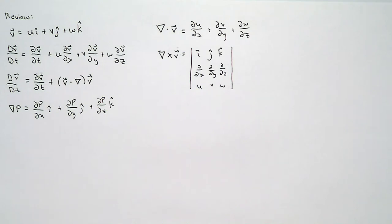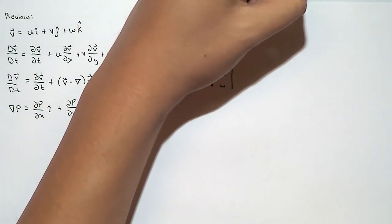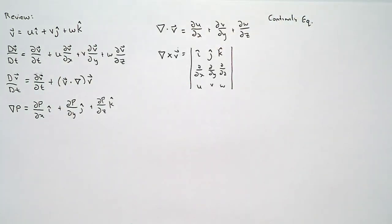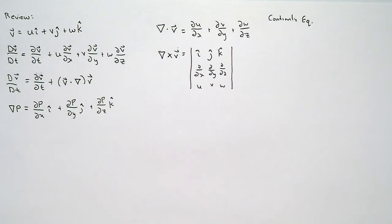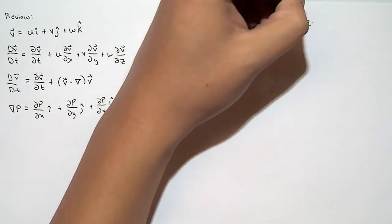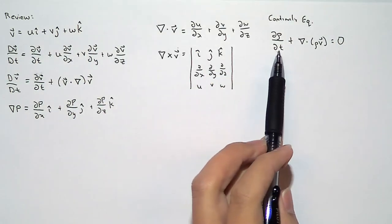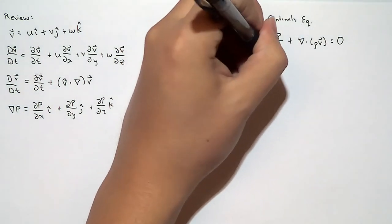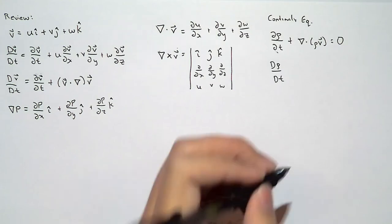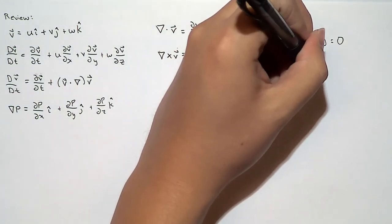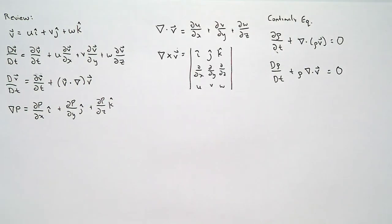We ended our last class by deriving the continuity equation — an expression for the conservation of mass in differential terms. It didn't depend on volume, only on the properties of the fluid and the velocity field. We used the definition of the material derivative to express the continuity equation a bit differently. You can use whatever form of the continuity equation is most convenient.